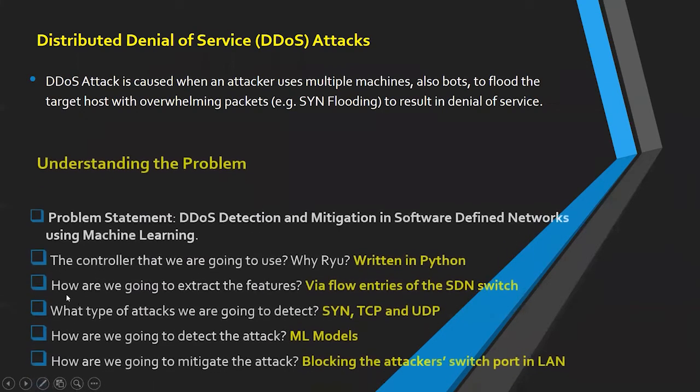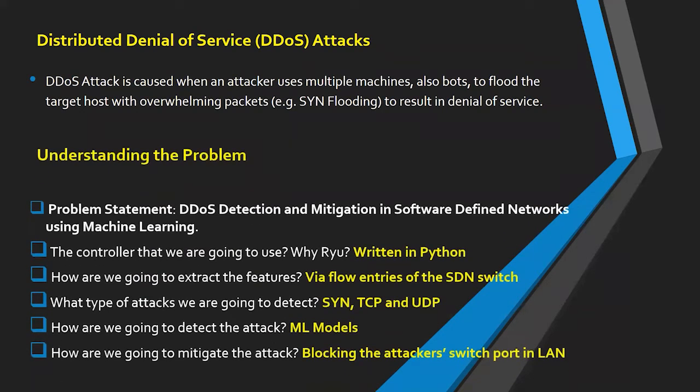A DDoS attack overwhelms the victim with a lot of traffic coming from many random source IPs, making it hard for the victim to process even legitimate traffic. We are detecting that attack in the SDN environment. The types of attacks we detect are ICMP, TCP, and UDP attacks, which are detected using machine learning. After detection, we mitigate the attack by finding the attacker's switch port using the ARP table, which contains a list of switch ports along with the host IPs connected to the switch.